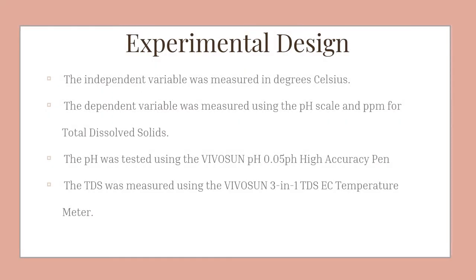The independent variable was measured in degrees Celsius. The dependent variable was measured using the pH scale and parts per million for total dissolved solids. The pH was tested using a Vivosun pH pen, and the TDS was measured using the 3-in-1 TDS meter.